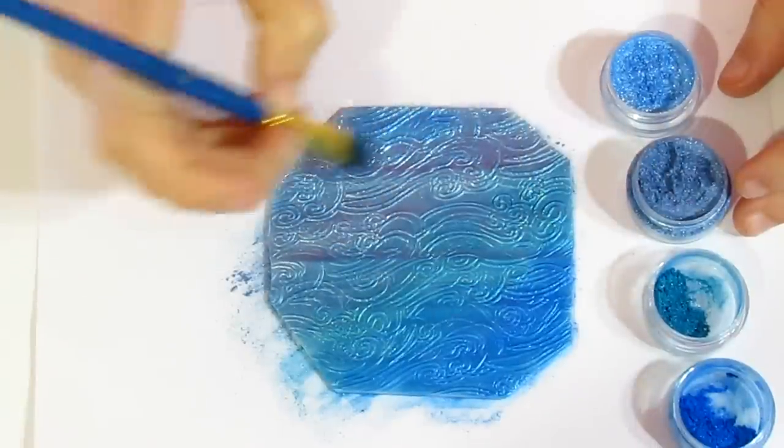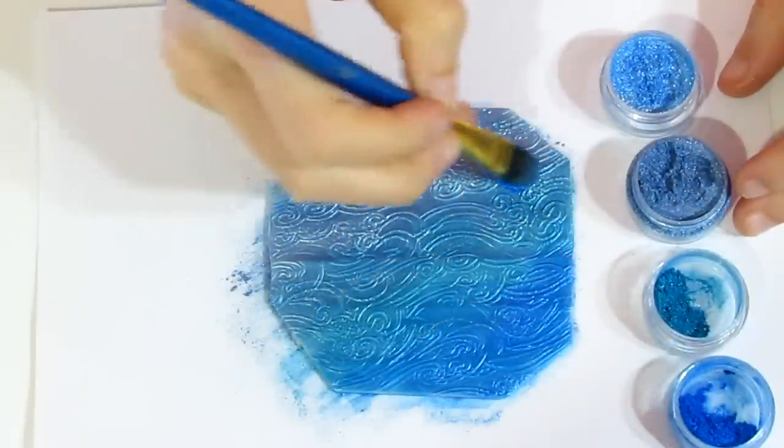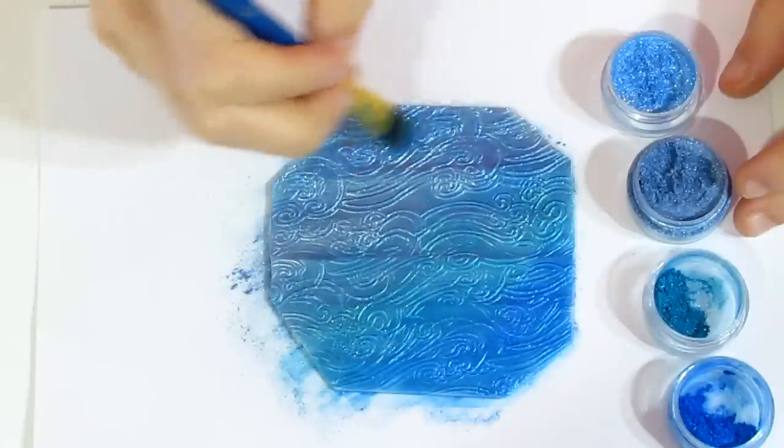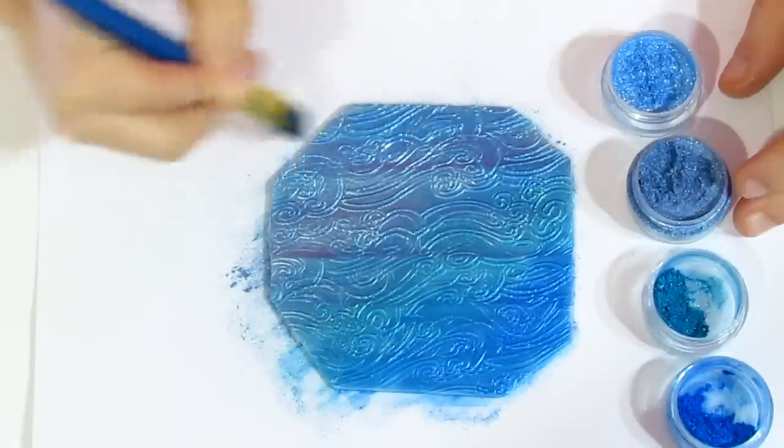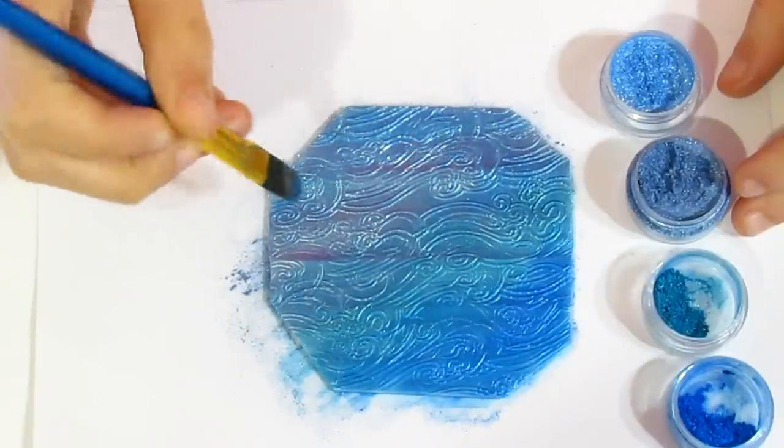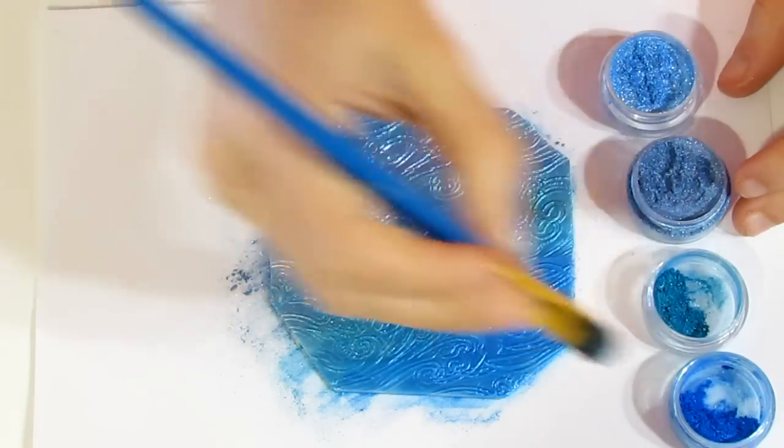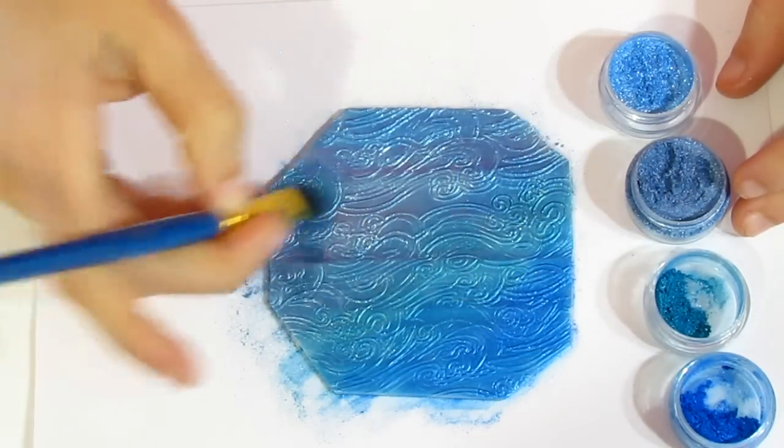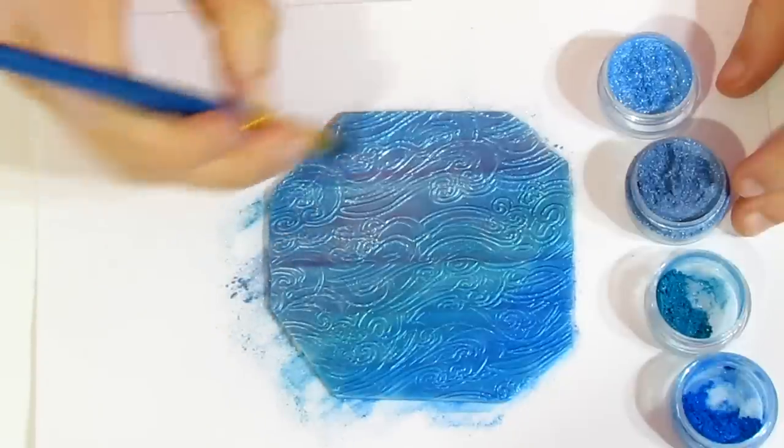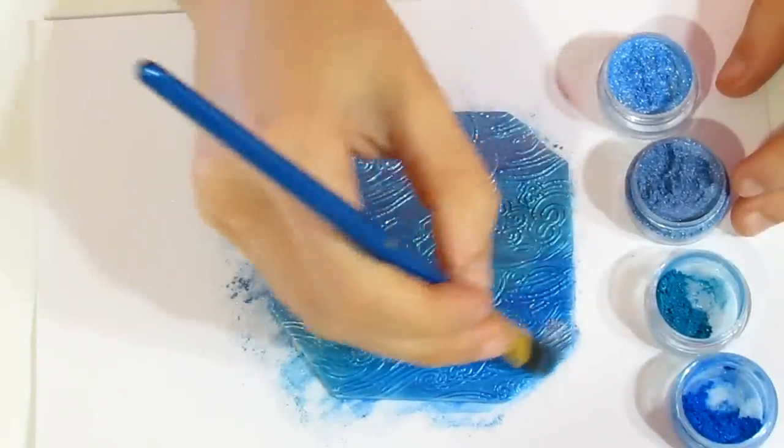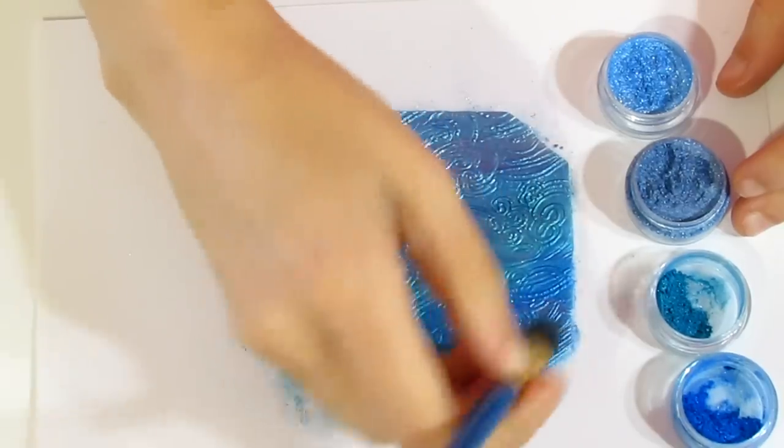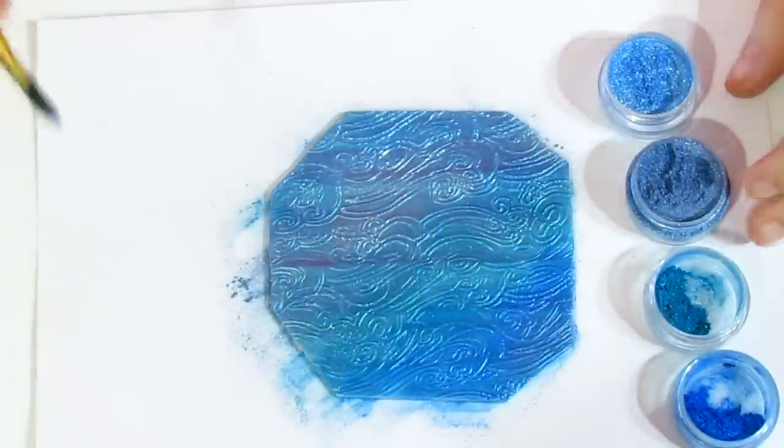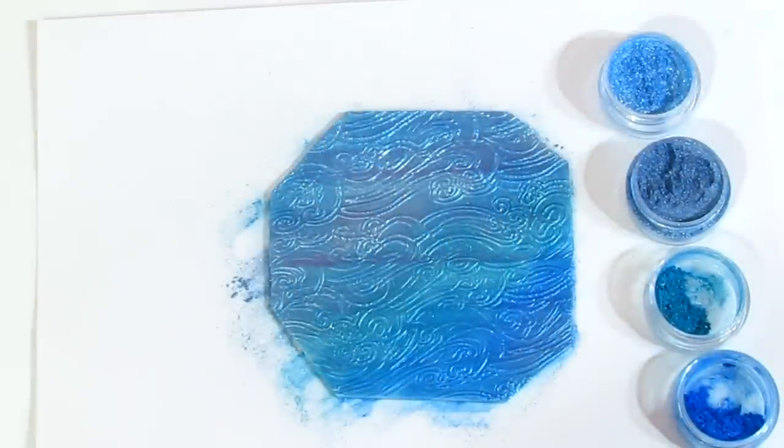And then you can even take some of this darker color and add it into sections just to give slightly different tones, just because I feel like this part over here is a little bit light. You can add that in. You can even add in some of this green. So just have fun. Don't make it all just one color. Play around and have some fun with it.